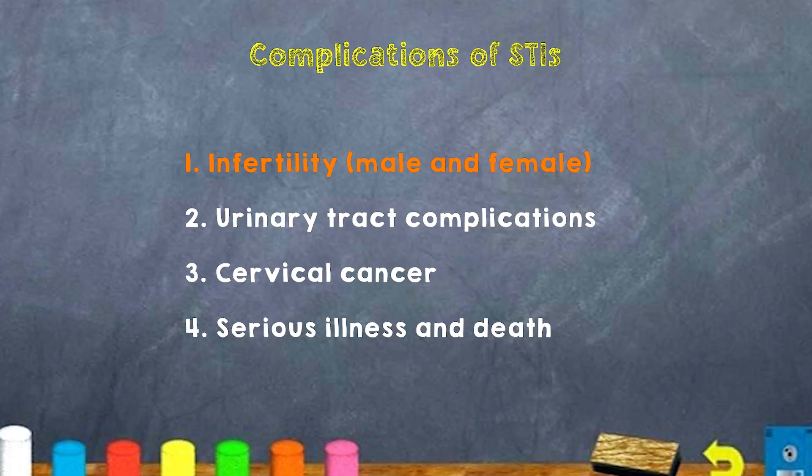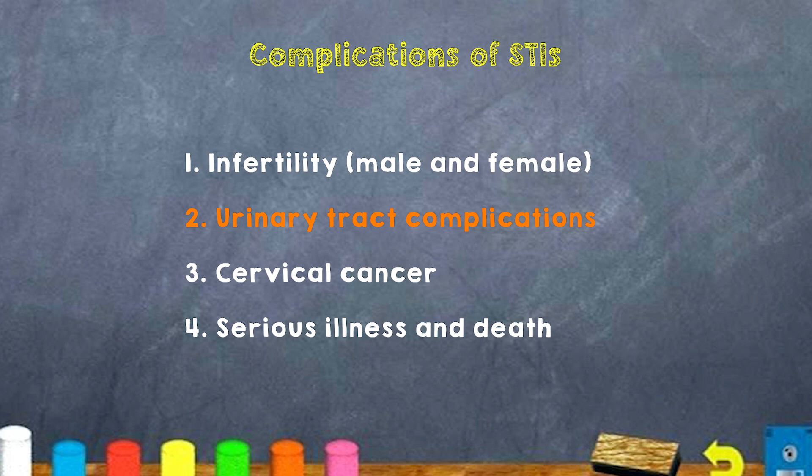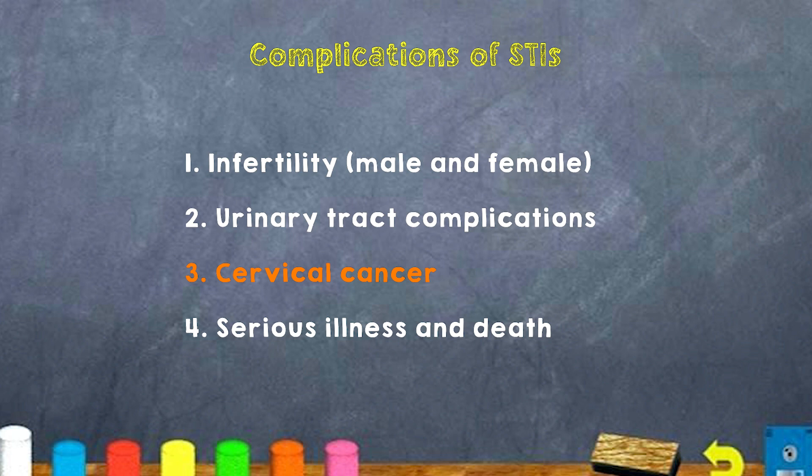With symptoms will come some amount of complications. What are some complications of STIs? You can have infertility — basically, the male and the female cannot have an offspring. Next, you have urinary tract complications. You can also have cervical cancer. You can have serious illness and even death.